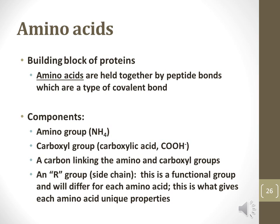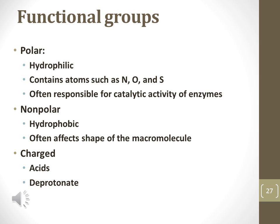Amino acids are held together in a chain by peptide bonds, which are a special type of covalent bond formed by dehydration synthesis. Components of an amino acid include an amino group and a carboxyl group. A peptide bond is formed by linking the amino group to the carboxyl group. An R-side chain is also present and each type of amino acid has a unique R-side chain. Polar functional groups are hydrophilic, contain nitrogen, oxygen, or sulfur, and are often responsible for catalytic activity in enzymes.